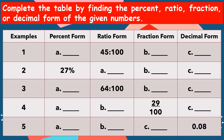Okay kids, now complete the table by finding the percent, ratio, fraction, or decimal form of the given numbers. For number one, our given is the ratio form: 45 is to 100. So we have 45% for the percent form, 45 hundredths for the fraction, and 0.45 for the decimal. For number two, we have 27%. For ratio: 27 is to 100. For fraction: 27 hundredths. For decimal: 0.27 (27 hundredths).